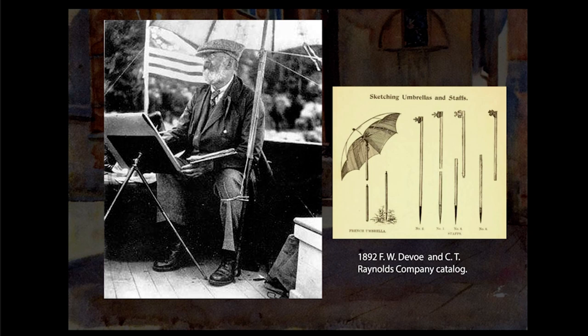Another interesting thing: Sargent painted using some gadgets, and this is one of them — sketching umbrellas and staffs. I'll add a link in the description for a post by James Gurney describing this process. As he was inside a boat, he couldn't fix the staff or umbrella to the ground, so he tied it down to his leg so he could have the right amount of light and sun to see the colors and values in a clear and direct way.